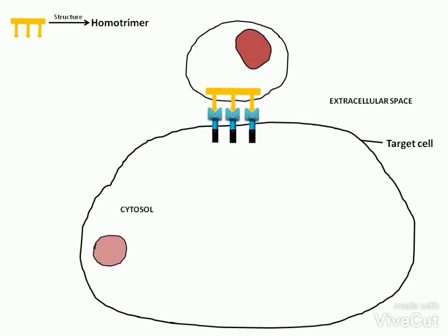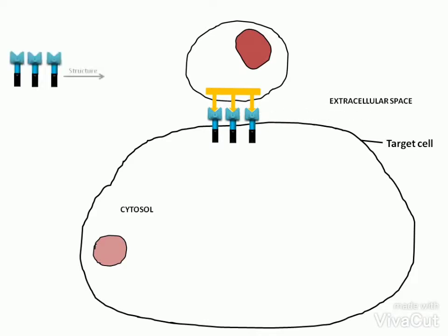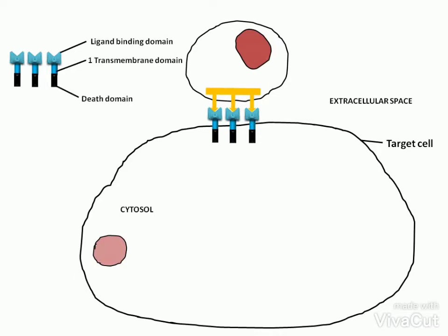The FAS death receptor is also a homotrimer. It consists of three domains: an extracellular ligand binding domain, one transmembrane domain, and an intracellular death domain. This death domain is required for the FAS death receptor to activate the apoptotic program.